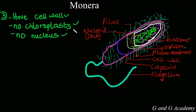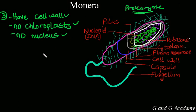It doesn't have a well-defined structure, and most of the structures found in higher organisms are not found in this Monera, which is a typical prokaryote. It has nucleoid or DNA, but they are just nucleus material — it doesn't have a well-defined nucleus, although it has nucleus material.